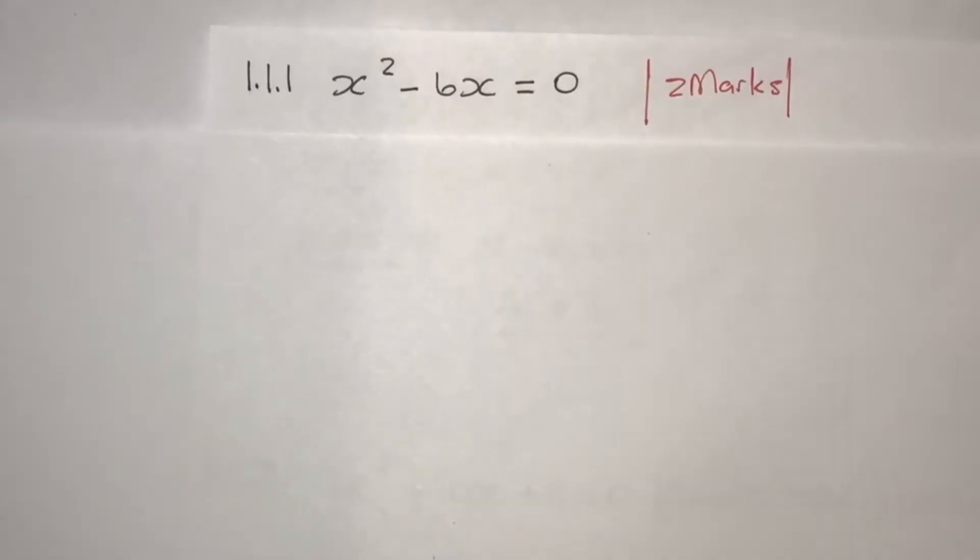Question 1.1.1, x squared minus 6x is equals to 0. So this question is allocated two marks.